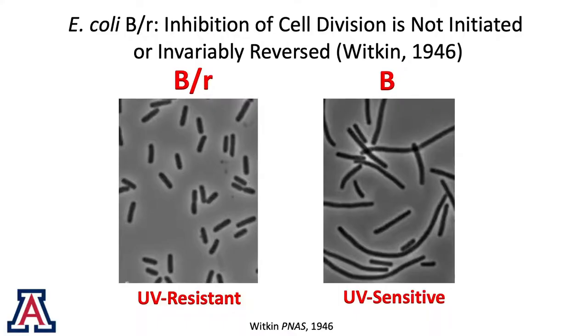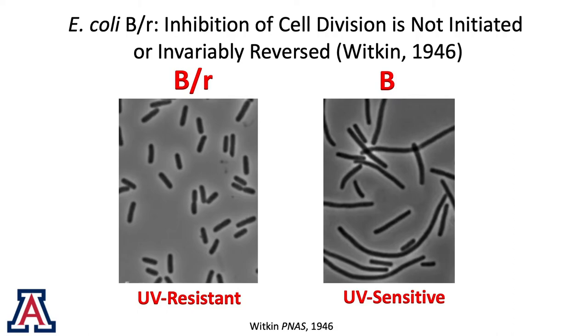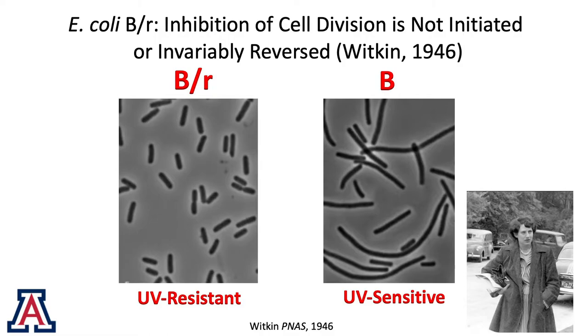What's wrong with the picture? It switched, right? So what was shown is if it's resistant, it doesn't. The B-bar-R strain, identified by Witkin in 1946, doesn't filament. What do you call IB, which is UV-sensitive, filaments? And this actually played a key role in thinking about the SOS response to DNA damage. This is a really cool picture of Evelyn in about 1947, 48.